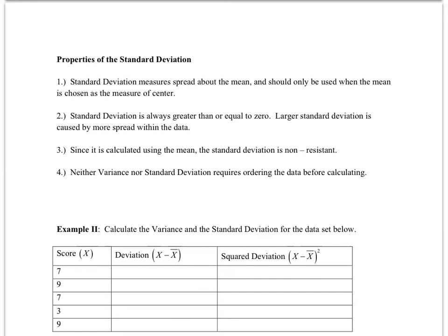Here are several properties of standard deviation. First, standard deviation measures the spread about the mean — basically, on average, how far are the scores from the mean of the data. This should only be used if the mean is a good measure of center. We have talked before about how the mean is not resistant to extreme highs and lows. Standard deviation is always greater than or equal to zero, and a larger standard deviation is caused by more spread — more distance or deviation from the mean.